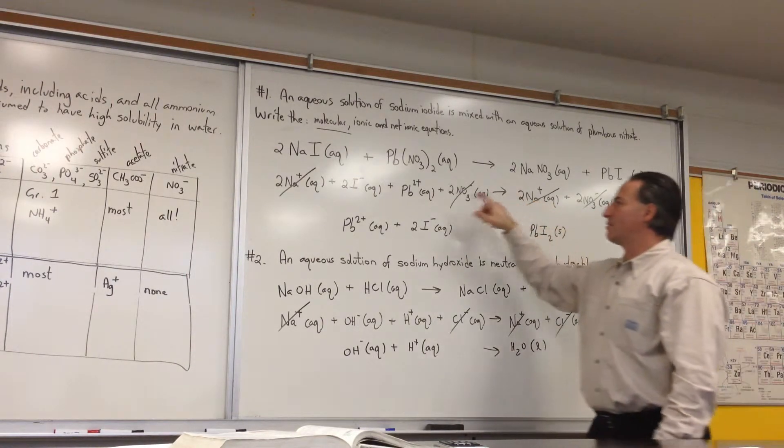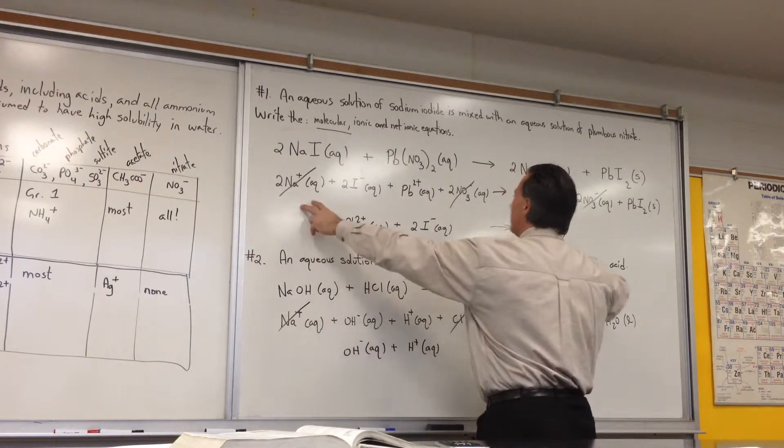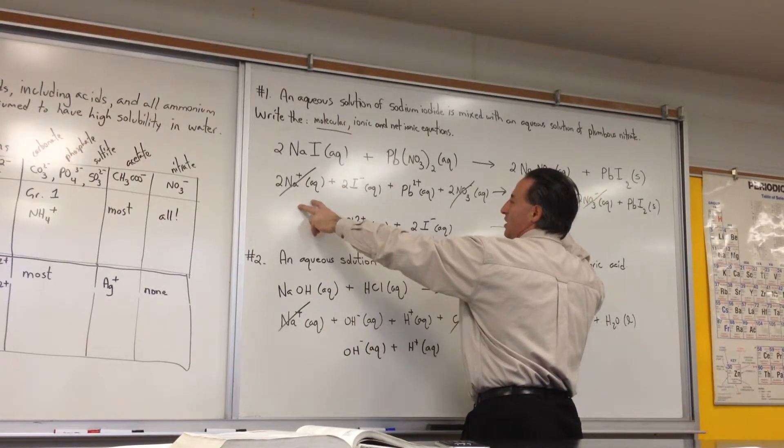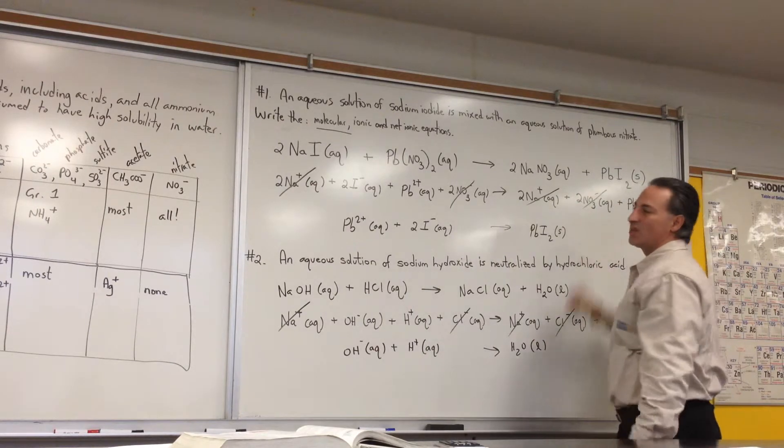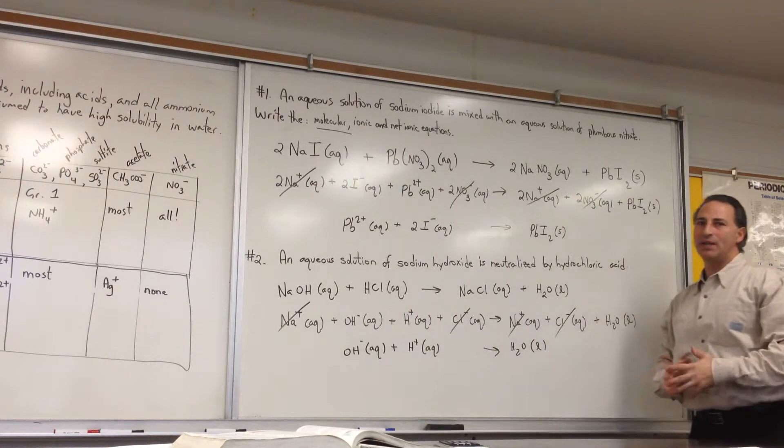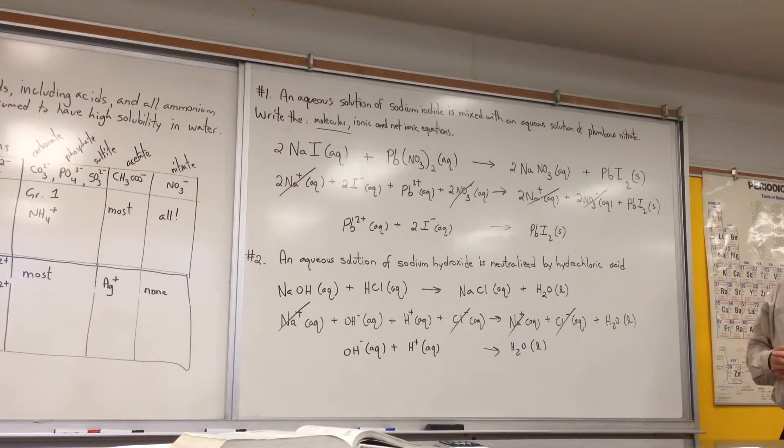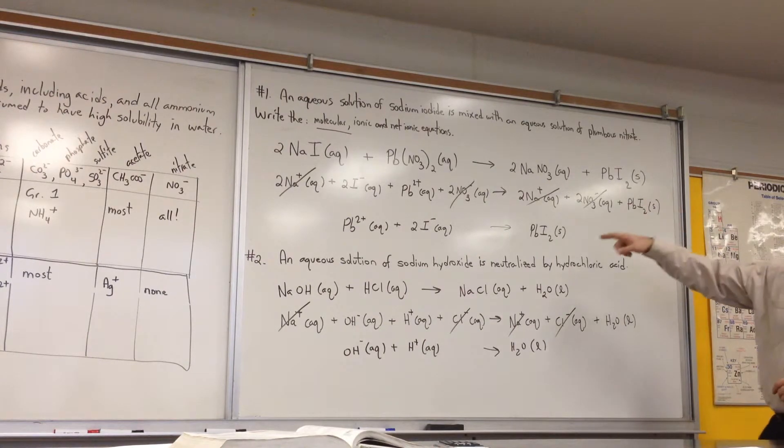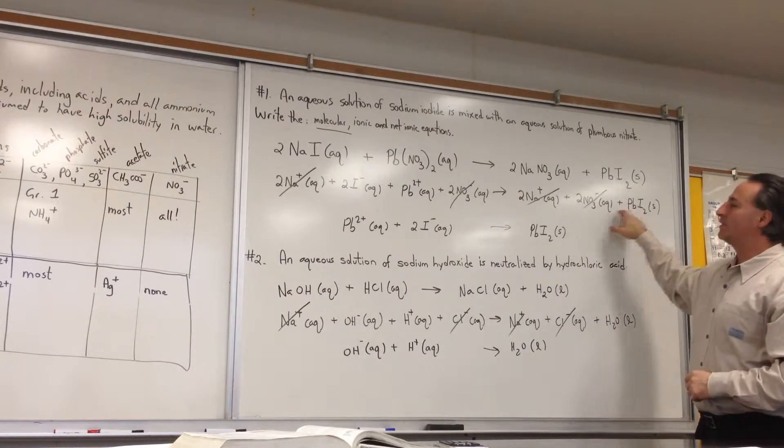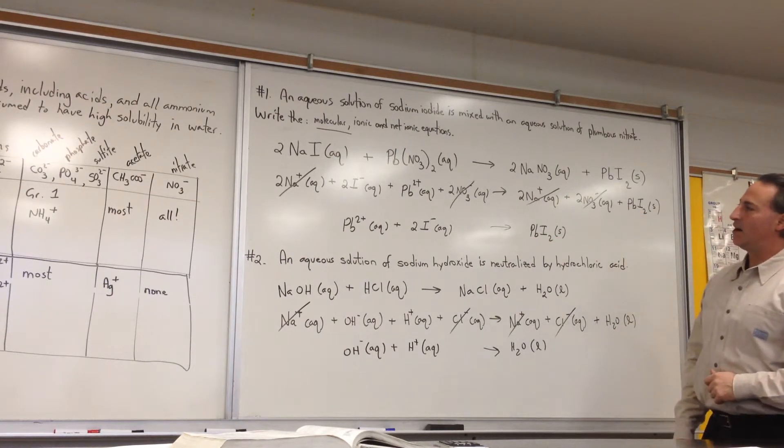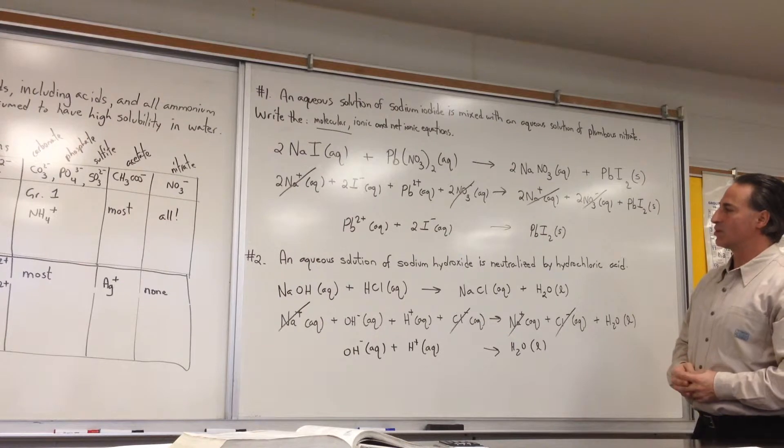And in the final equation, you cross out everything that appears on both sides. So sodium appears on both sides unchanged. Nitrate appears on both sides unchanged. Those are called spectator ions. They're called spectators because they just sit there. They don't participate in the reaction. So you cross them out, and you just recopy the parts that are actually reacting. This is called the net ionic equation. It actually shows you what's happening in the solution.